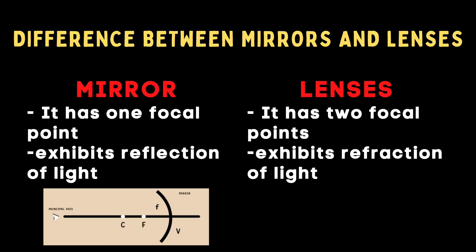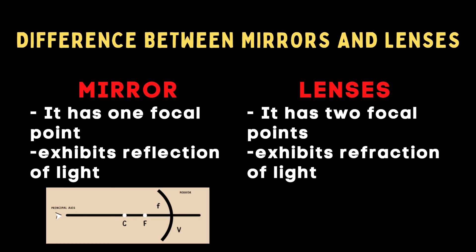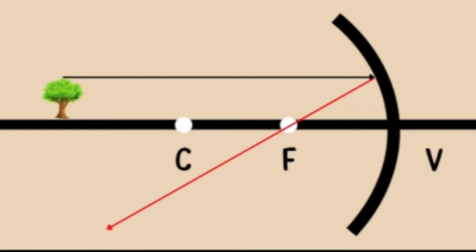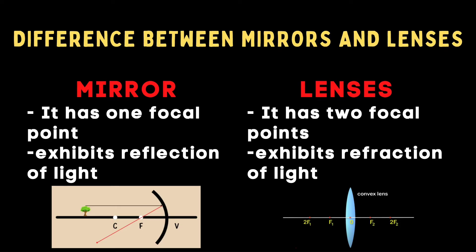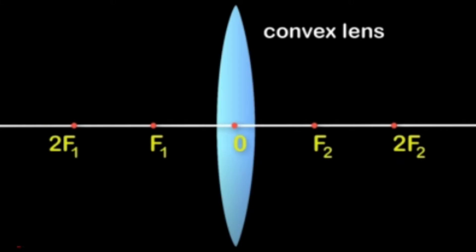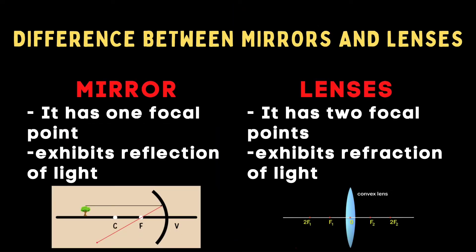If you notice in the mirror, there is only one focal point and it exhibits reflection of light. In lenses, there are two focal points. If you look at this image, there is 2F, or twice the focal point, and we have one F point here. And on the other side, there is a second focal point and 2F2. Why do we put 1 or 2 beside 2F? This is to represent the image so it's not confusing.